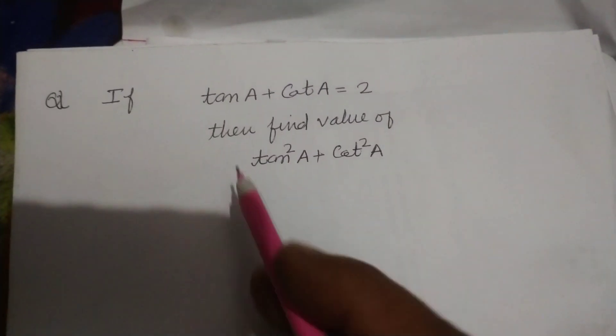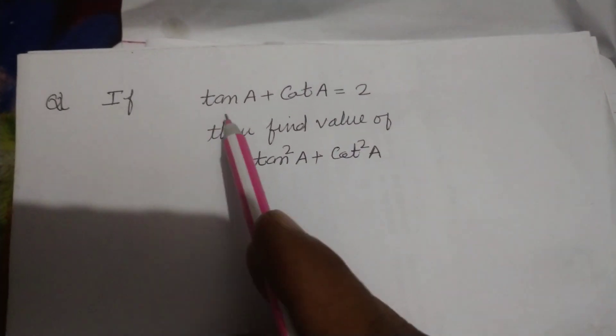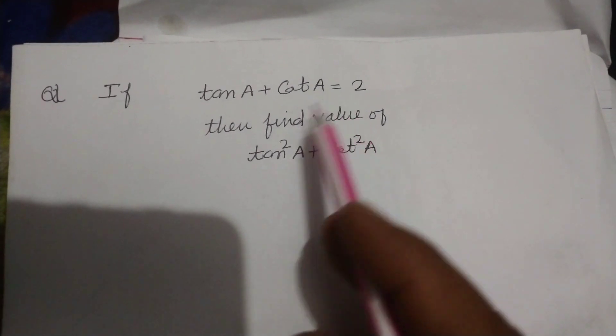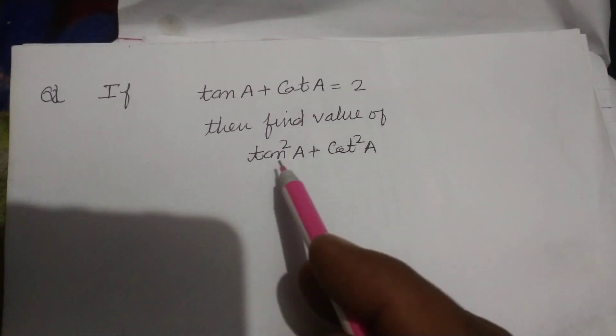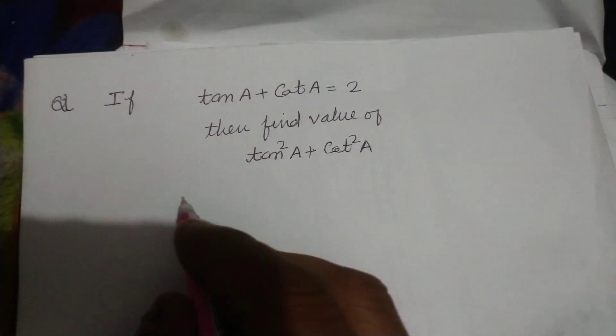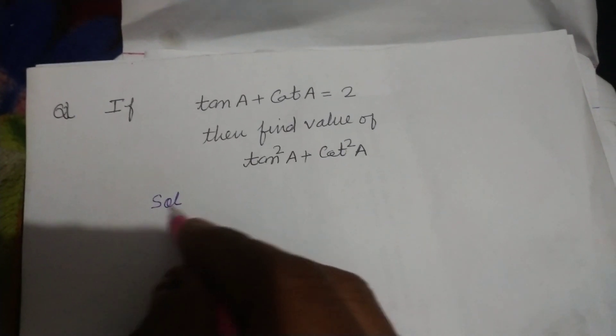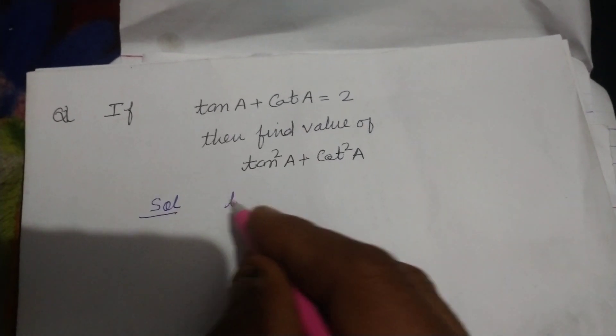Hello students, and welcome to this YouTube channel. Here the question is: If tan A plus cot A equals 2, then find the value of tan squared A plus cot squared A.